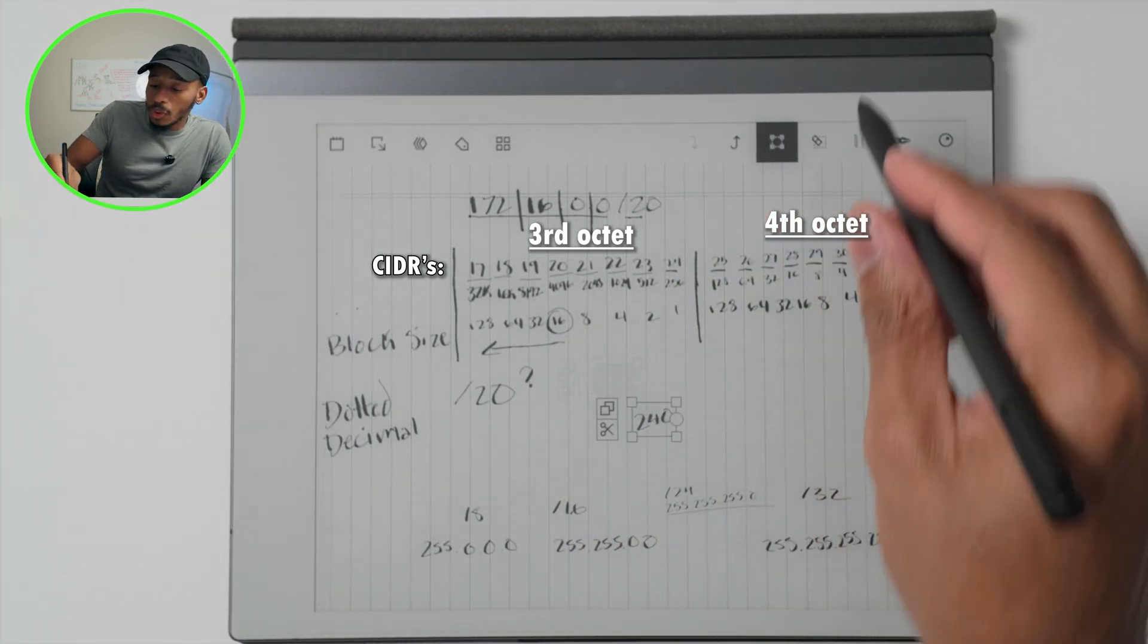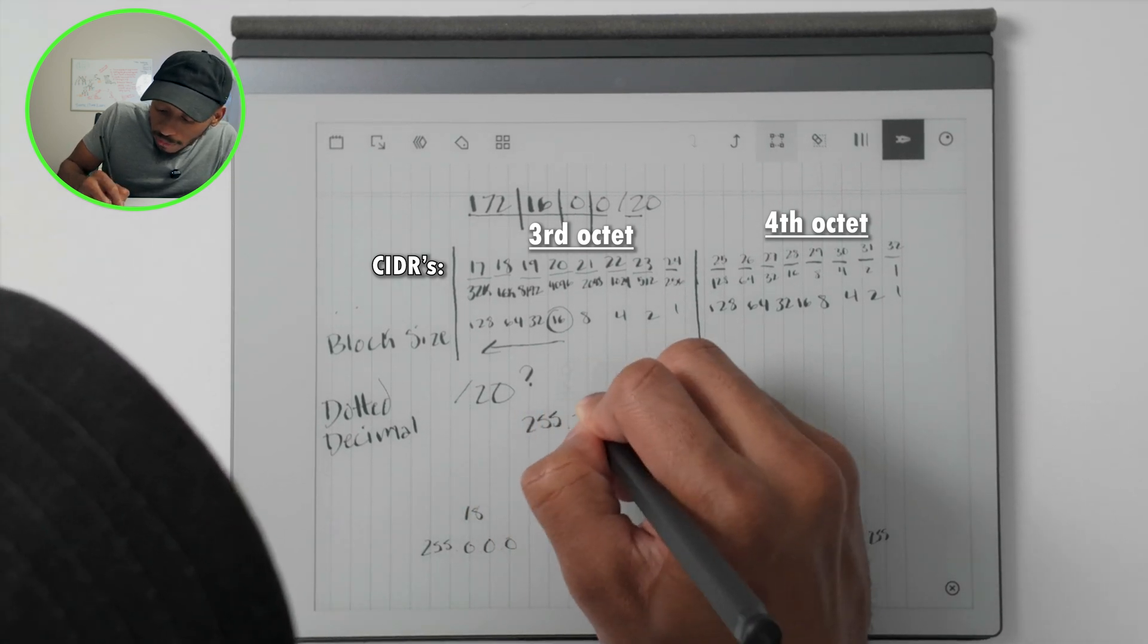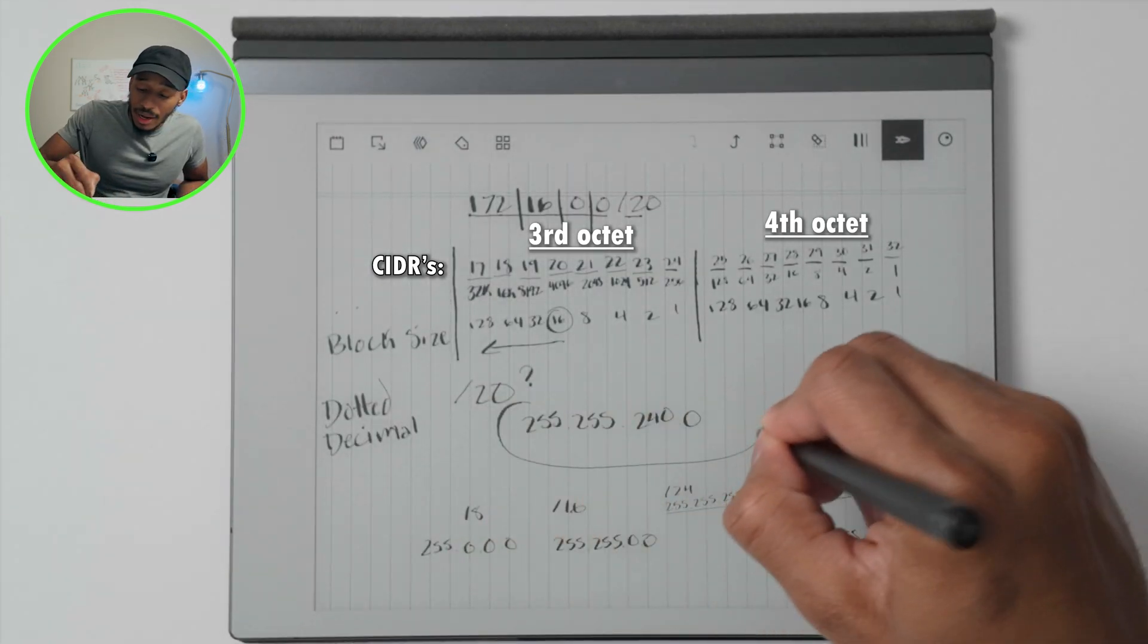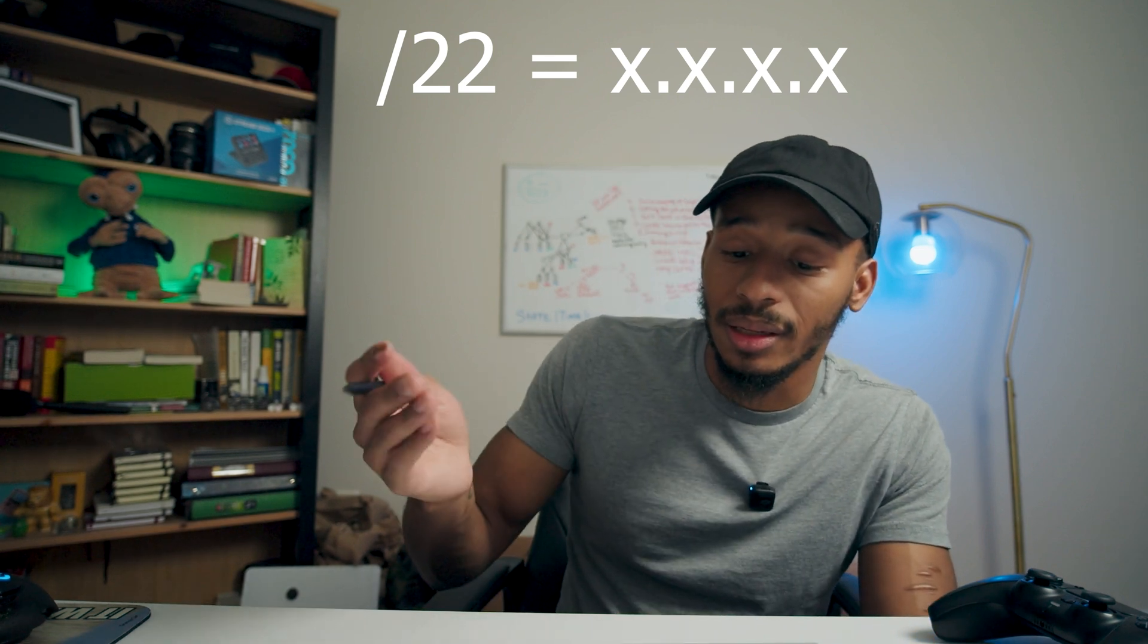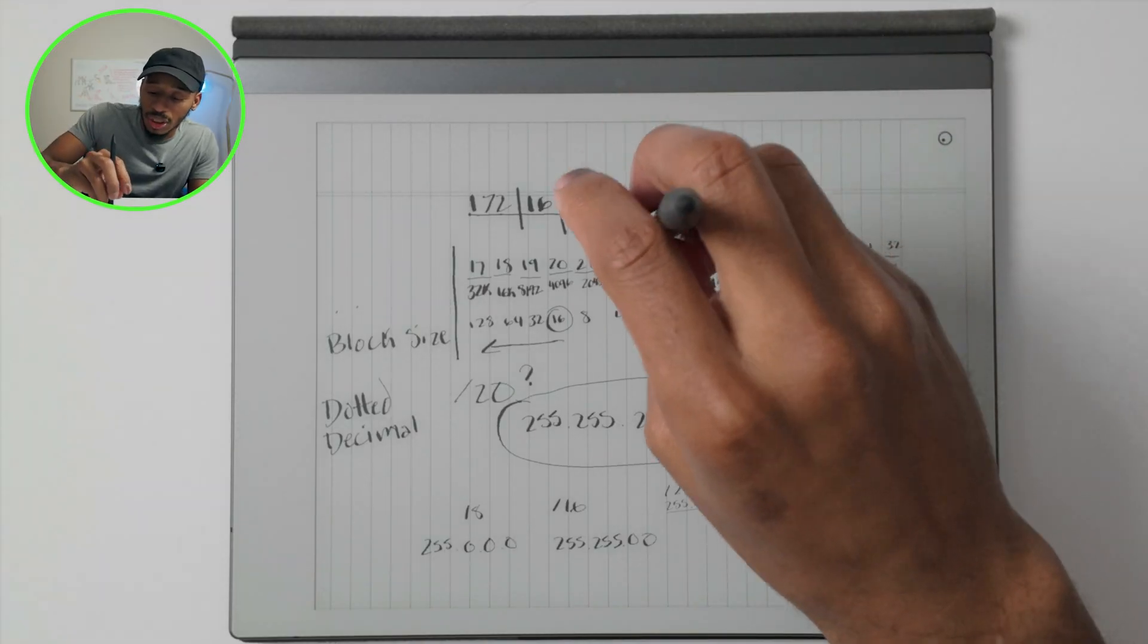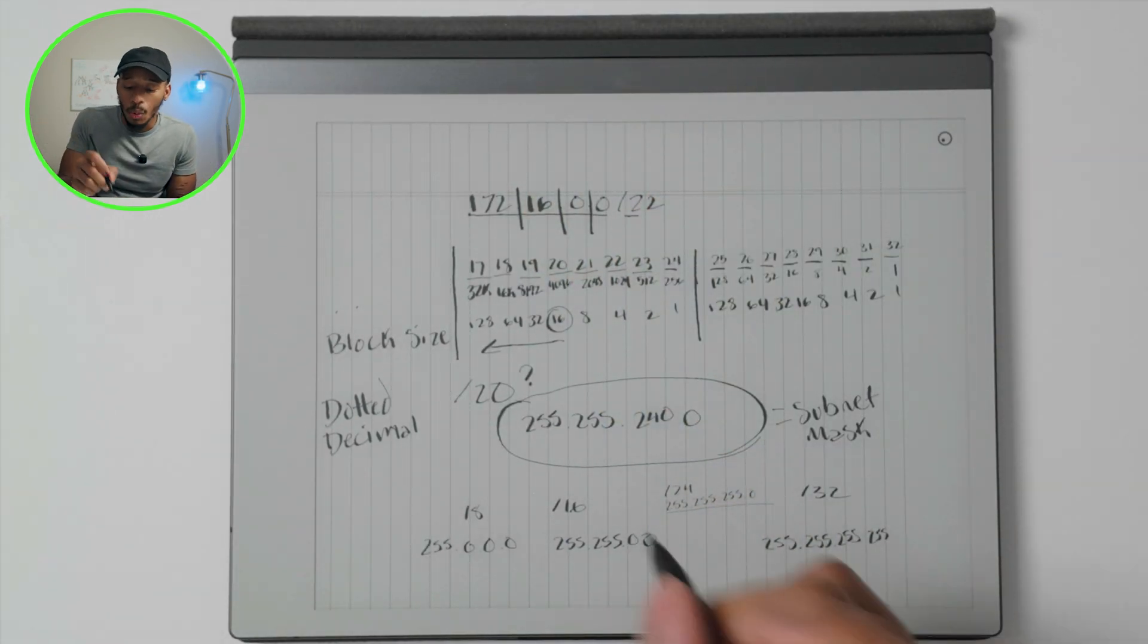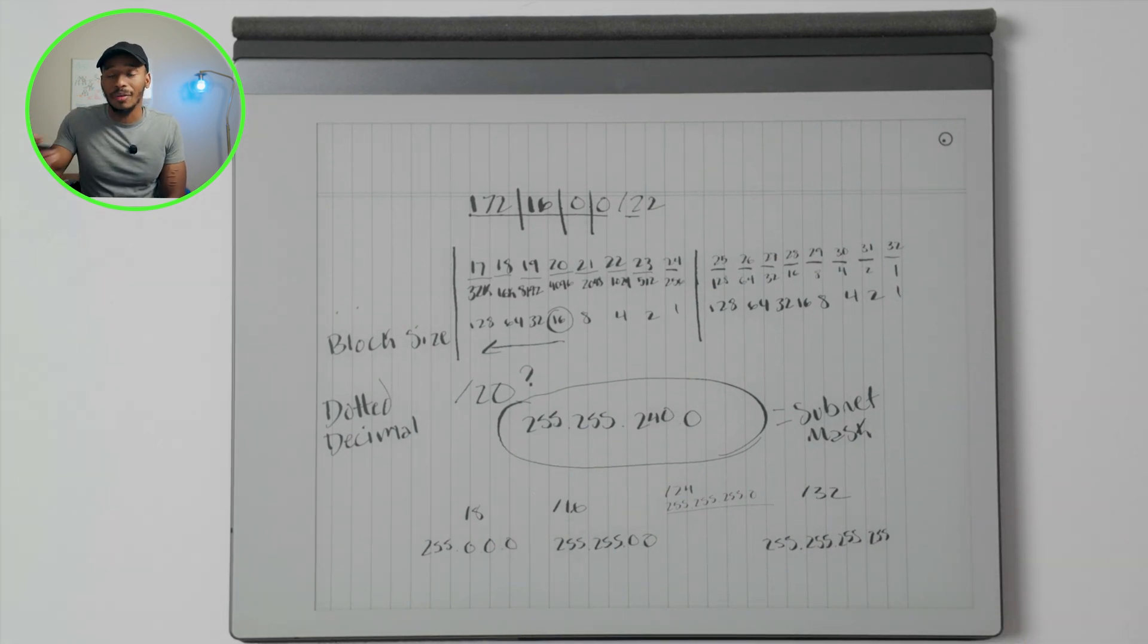Since I always leave these videos off on a puzzle for you, I'd like you to let me know down in the comments what would a /22 network look like if you represented it in the subnet mask. Just take this value right here and change that to a 22, and let me know down in the comments what that subnet mask would equate to using the formula that we just covered.